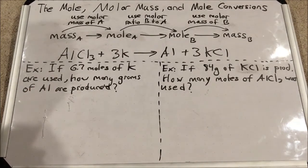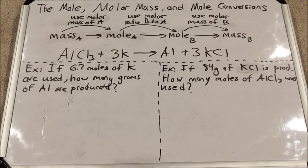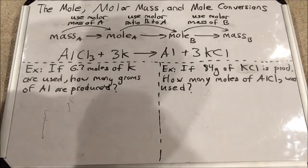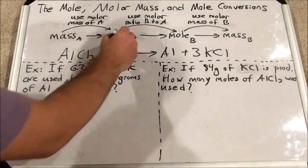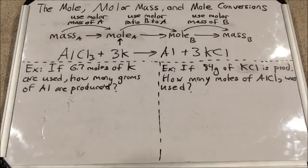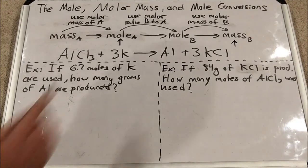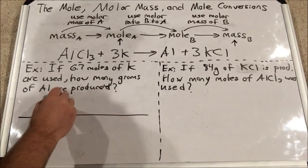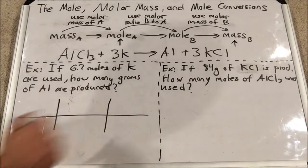For example: if 6.7 moles of K (potassium) are used, how many grams of Al (aluminum) are produced? I start at the mole spot and end at mass of aluminum — so this is a two-step process. Each arrow in the map represents one step, so I'll have two fractions in my factor label method.